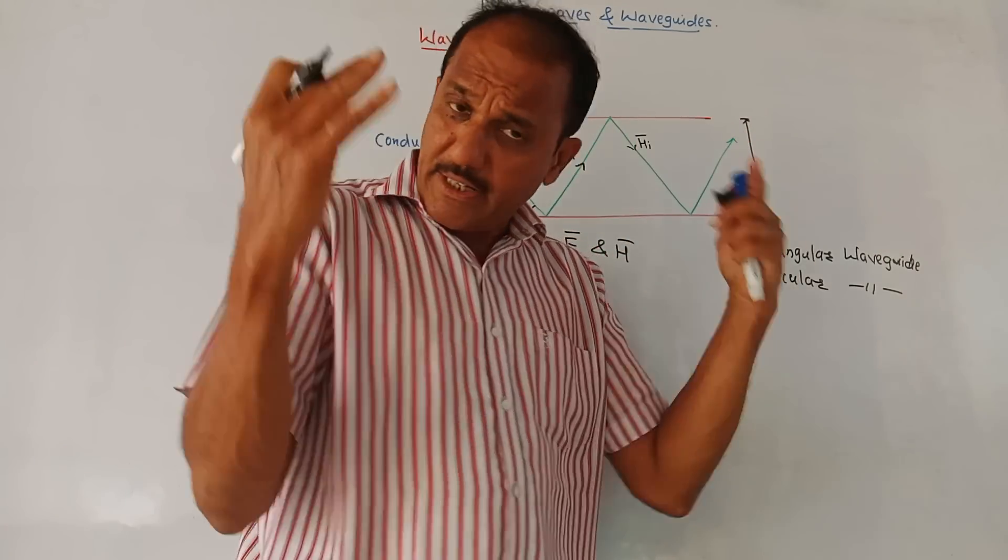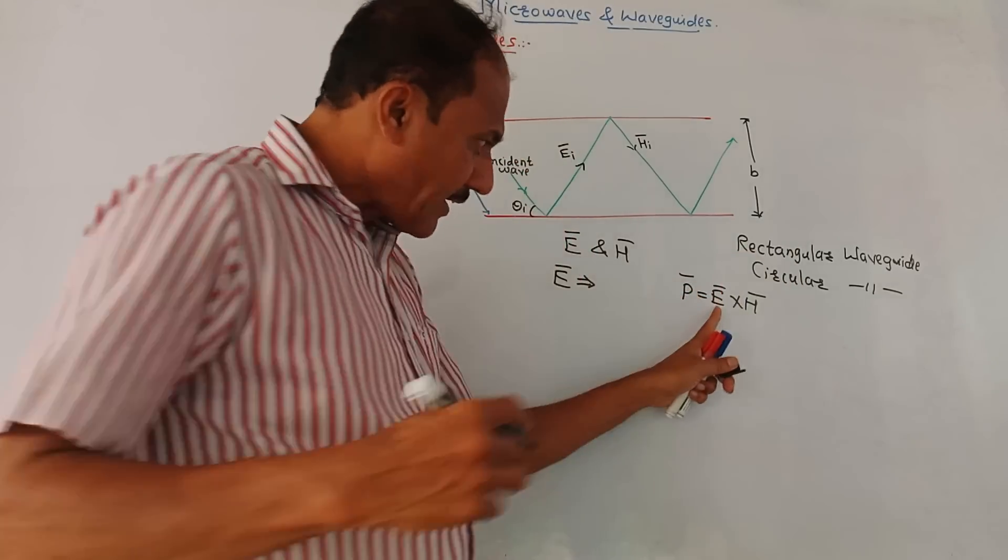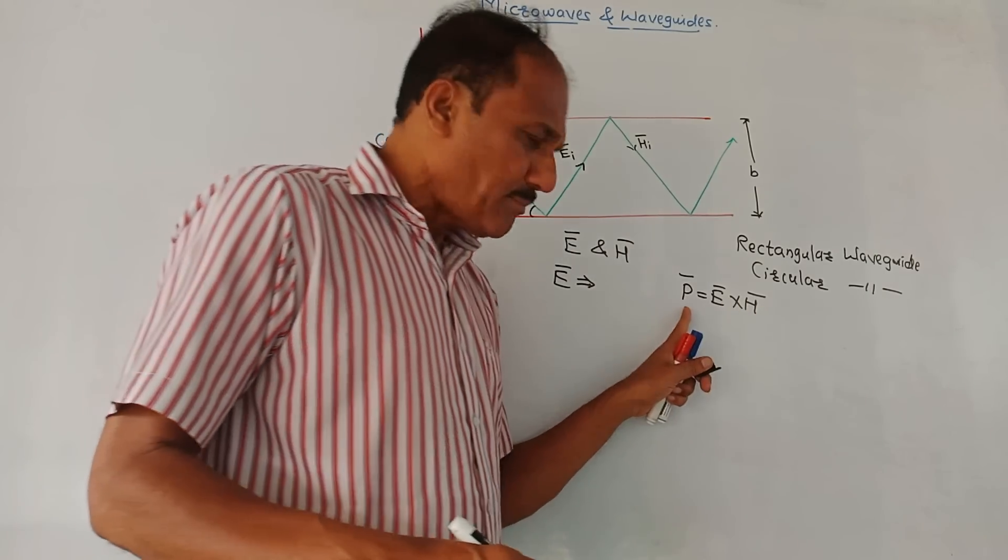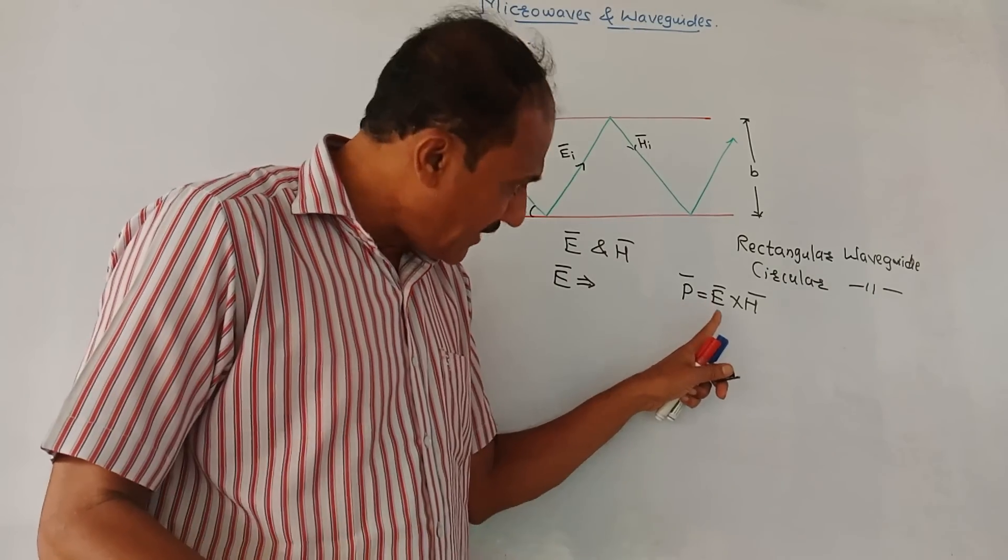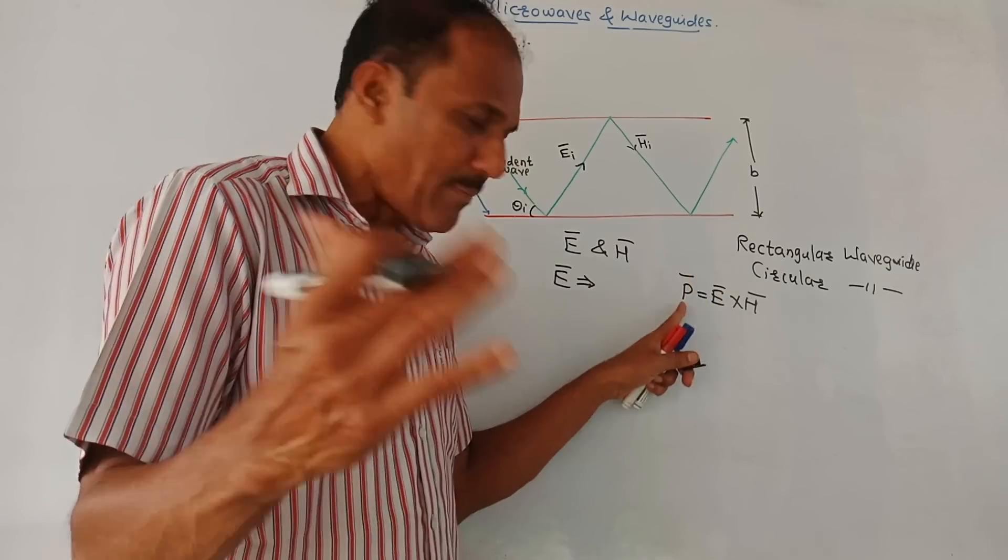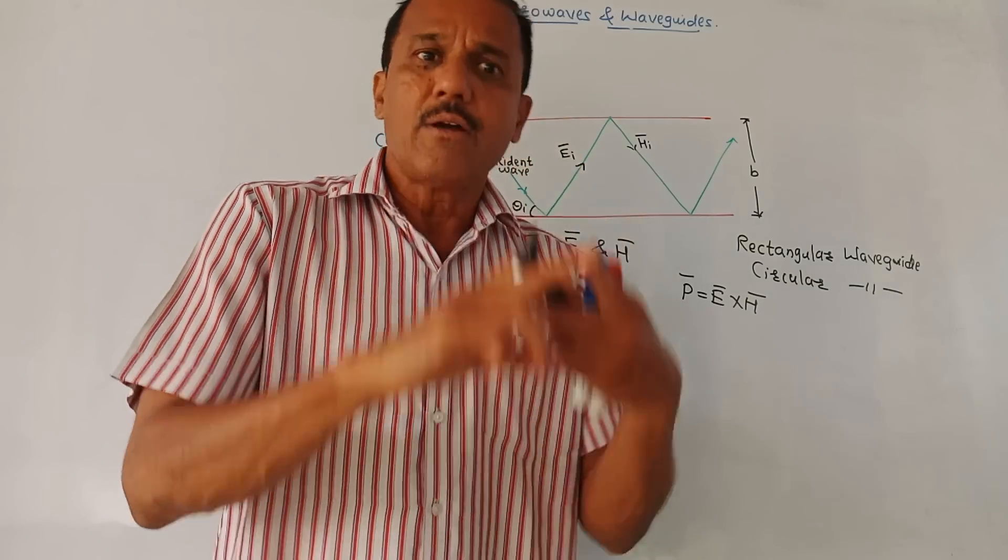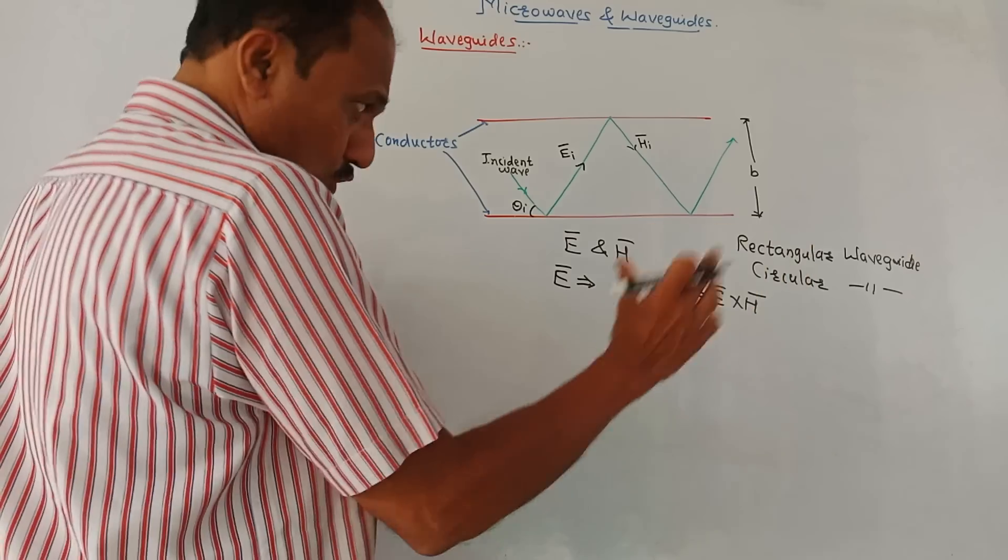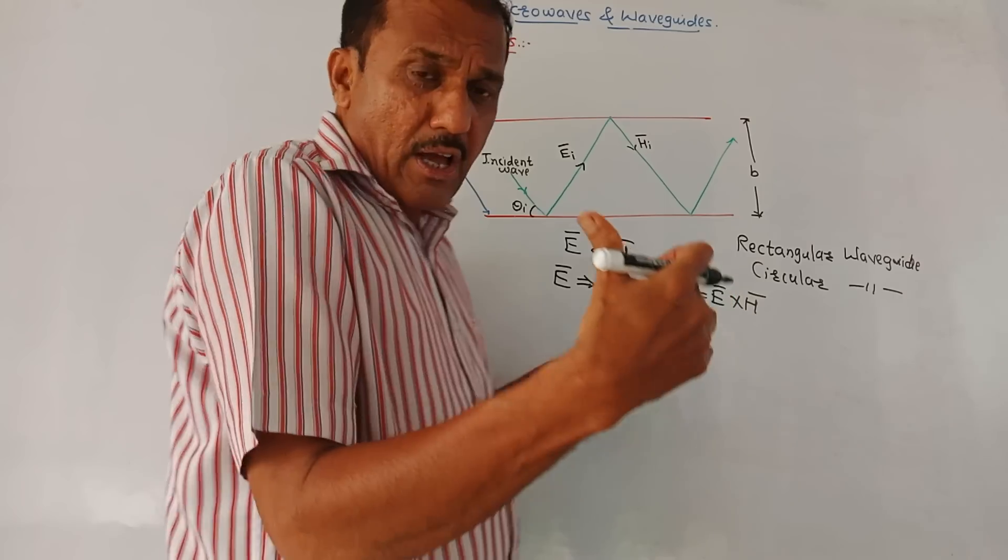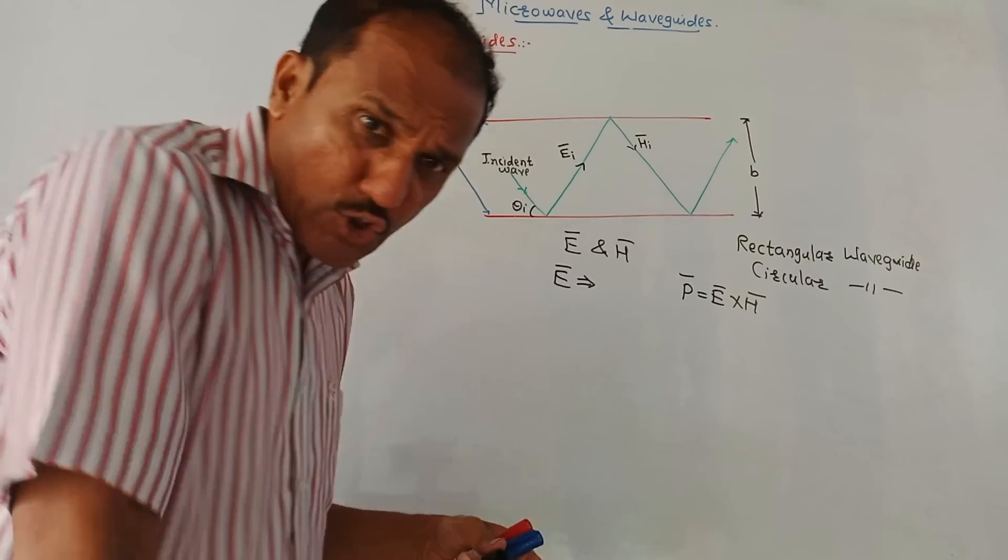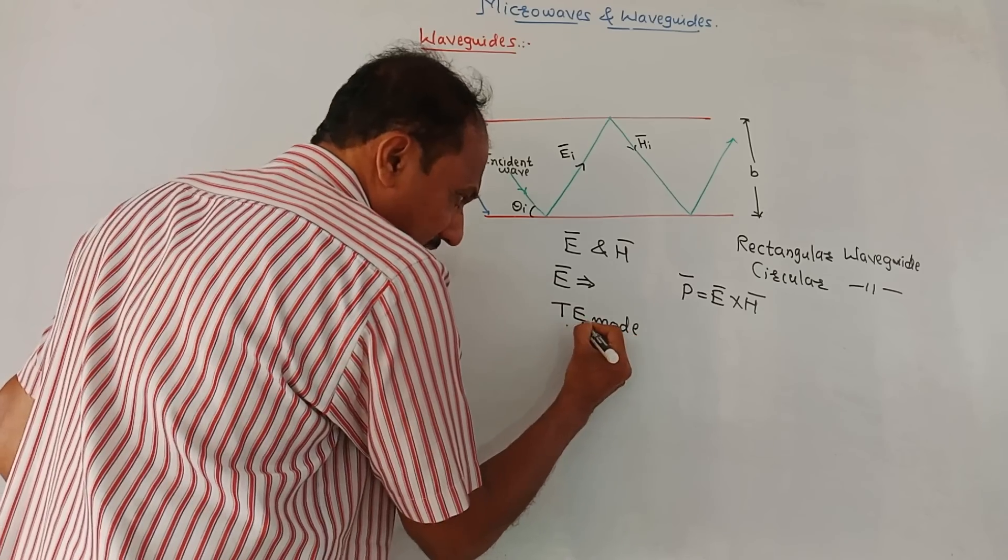If the direction of E bar is transverse, that means perpendicular to the direction of power of a wave. Now, let us brush up this concept. In electromagnetics, we have studied that according to pointing theorem, P bar is E bar cross H bar. E bar is electric field, H bar is magnetic field, P bar is the power. So, all these three terms are perpendicular to each other. That means, if E bar is along X axis, H bar will be along Y axis, P bar will be then along Z axis. Because, P bar power, E bar electric field and H bar magnetic field are mutually perpendicular to each other. So, if E bar electric field intensity is transverse or in the direction perpendicular to the direction of P bar, then this particular wave is called TE mode, transverse electric mode.